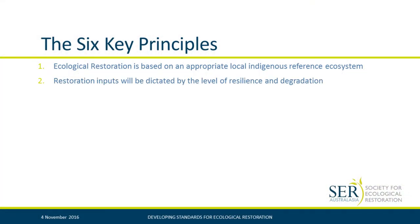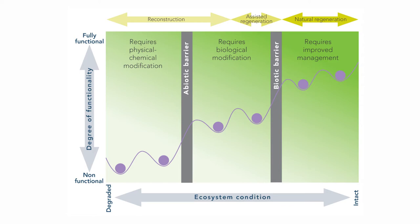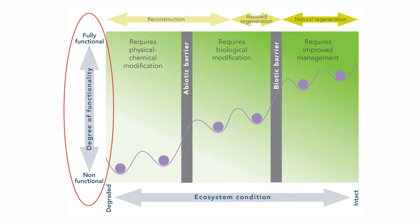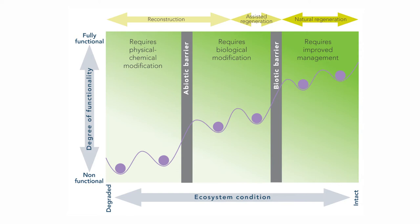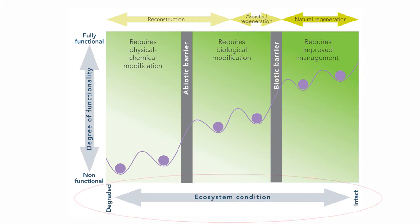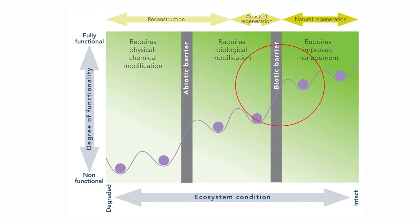Number two: restoration inputs will be dictated by the level of resilience and degradation. On this table, the vertical plane represents all of those variable functionality aspects of ecosystems — whether it's the soil, species composition, the relationship between plants and animals, that whole complexity of sites — and whether it's really degraded or fully functional. Then you look at ecosystem degradation: is it sitting at full degradation or is it quite intact? Assessing those things requires an enormous amount of skill to get in there, assess the site, look at all the ecosystem attributes and really work out what is happening on that site.